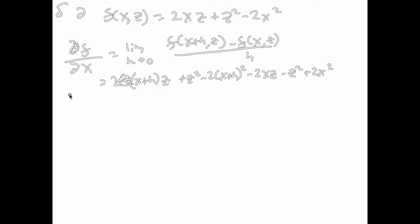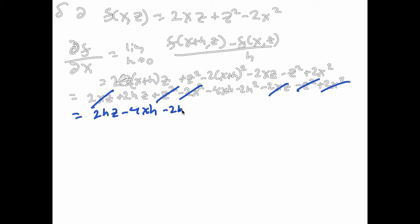We're going to go through and cancel things out. Multiply this out, we get 2xz + 2hz + z² - 2x² - 4xh - 2h² - 2xz - z² + 2x². We're going to cancel some things again. Here goes the 2xz's. Here go the z squareds. There go the x squareds. And that cancels everything. And this is going to equal 2hz - 4xh - 2h².